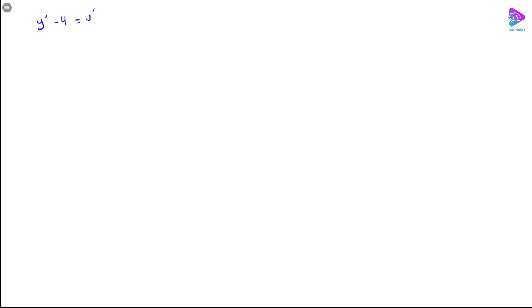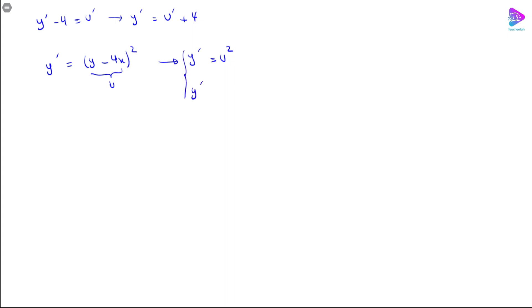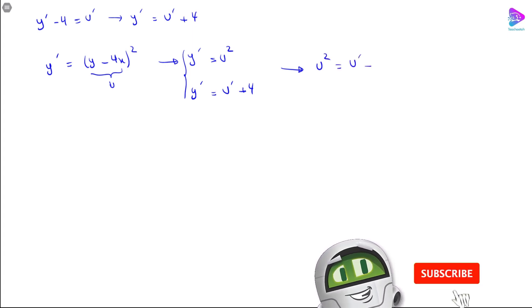We have y prime minus 4 equals u prime, so y prime equals u prime plus 4. Now looking back at the original equation, y prime equals (y minus 4x) squared, and we substitute u for y minus 4x, so y prime equals u squared. Since y prime also equals u prime plus 4, we can write u squared equals u prime plus 4.